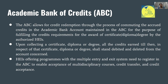ABC allows for credit accumulation and credit redemption — through the process of commuting the accrued credits in the academic bank account maintained in the ABC for the purpose of fulfilling the credits requirement for the award of certificate, diploma, or degree by the authorized HEIs। यानि कि certificate course की credit चाहिए, diploma की चाहिए, degree की चाहिए — उसके हिसाब से credit earn करके redempt भी कर सकते हैं। Upon collecting a certificate, diploma, or degree, all credits earned till then shall stand debited and deleted from the account concerned — debit भी होगा, credit भी होगा, earn भी होगा — जैसे पैसा bank में काम करता है, इसलिए इसको bank का नाम दिया गया।